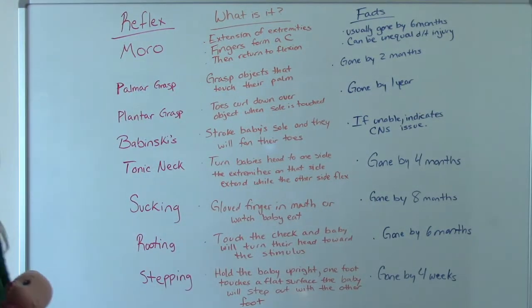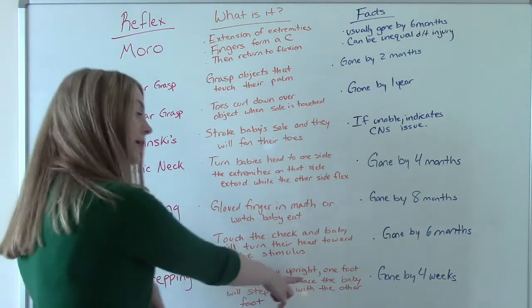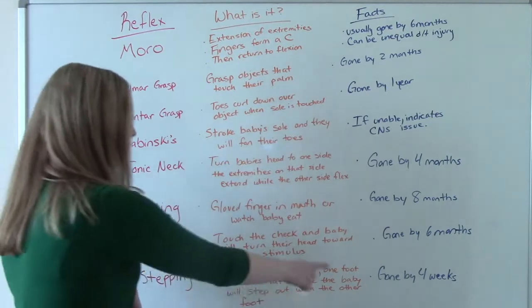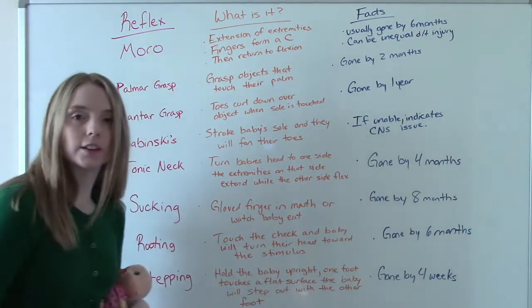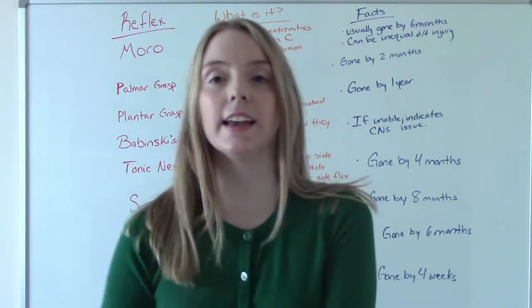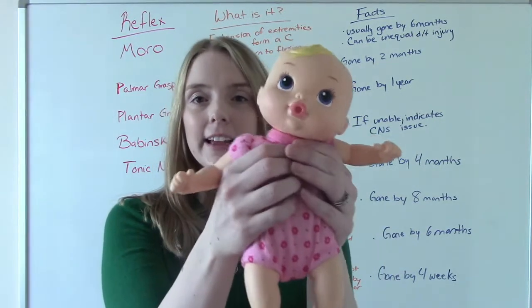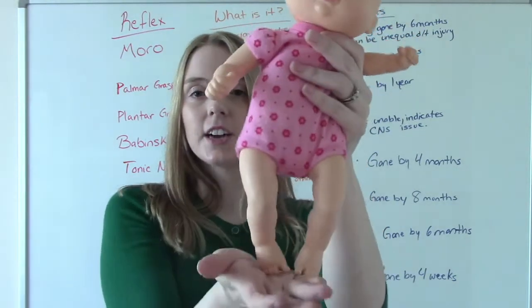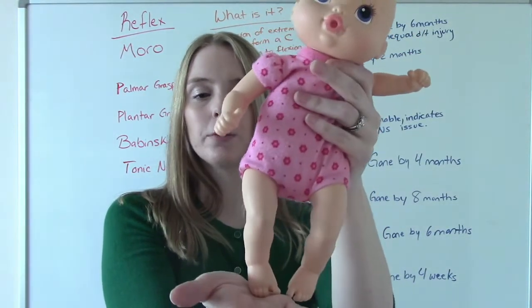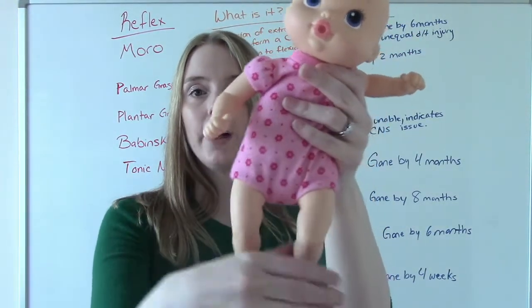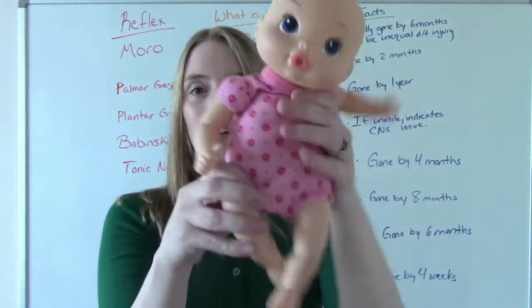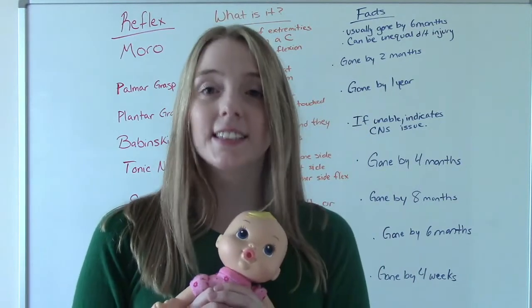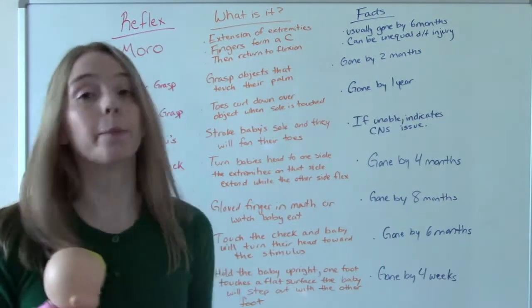Finally, our stepping reflex. We're going to hold the baby upright, supporting the head. You're going to hold the baby like this, under the armpits. And then one foot touches a flat surface, like the crib or the table, and the other foot will copy. So it almost looks like they're walking a little bit. That's why it's called the stepping reflex. And this is gone by four weeks.